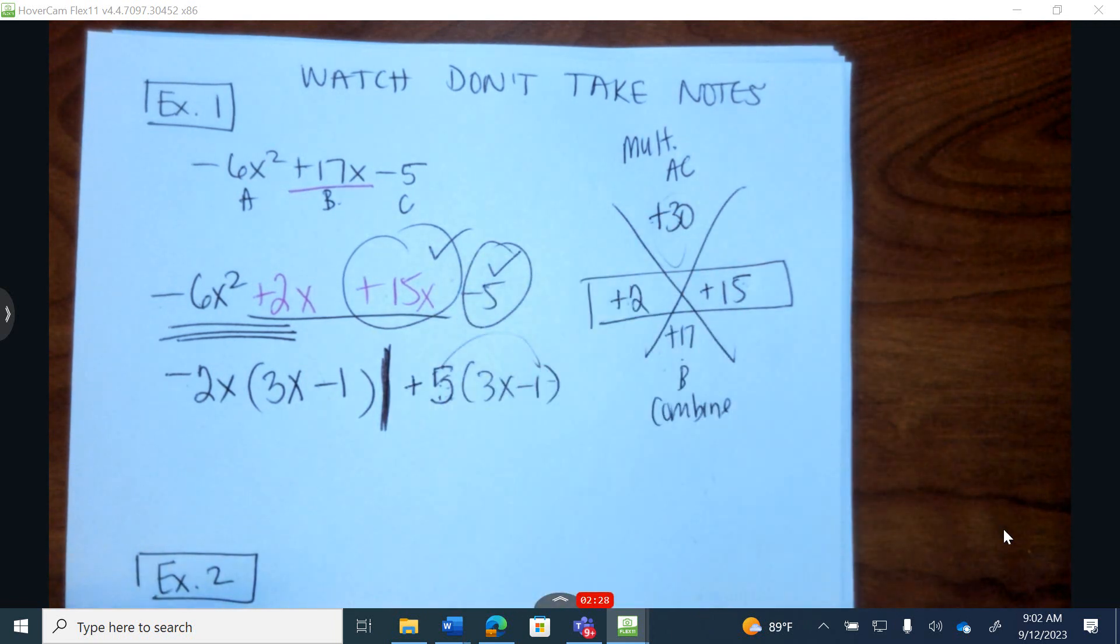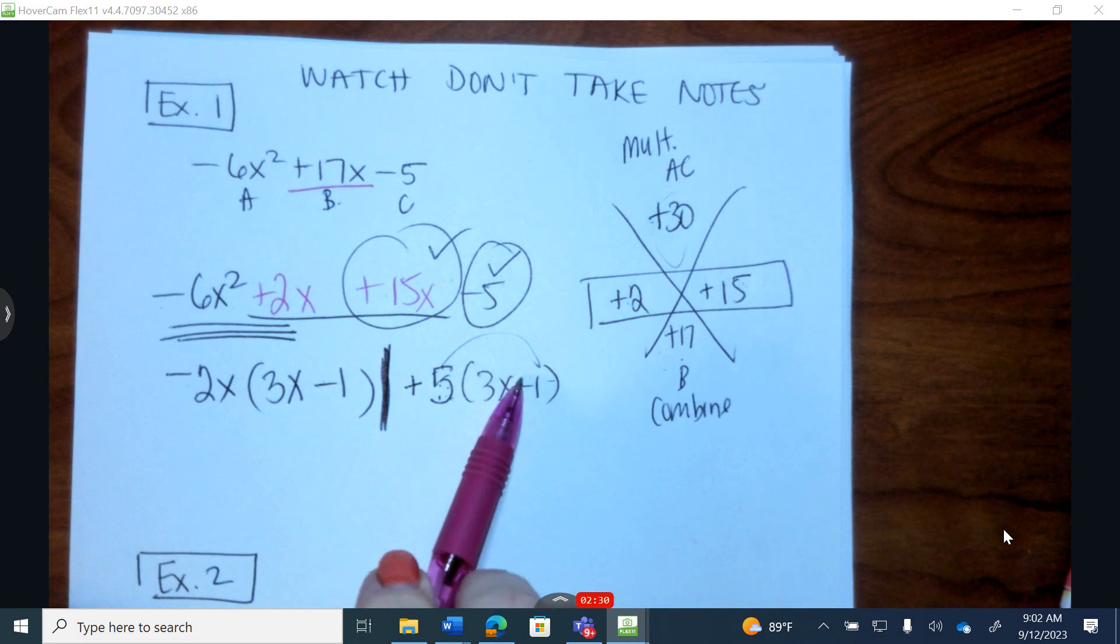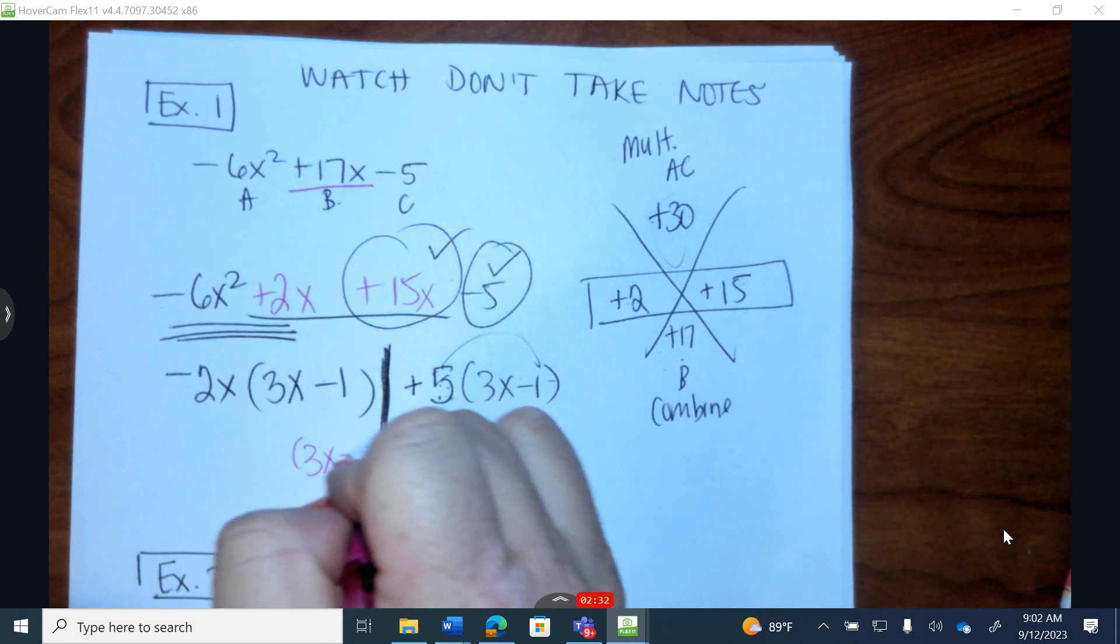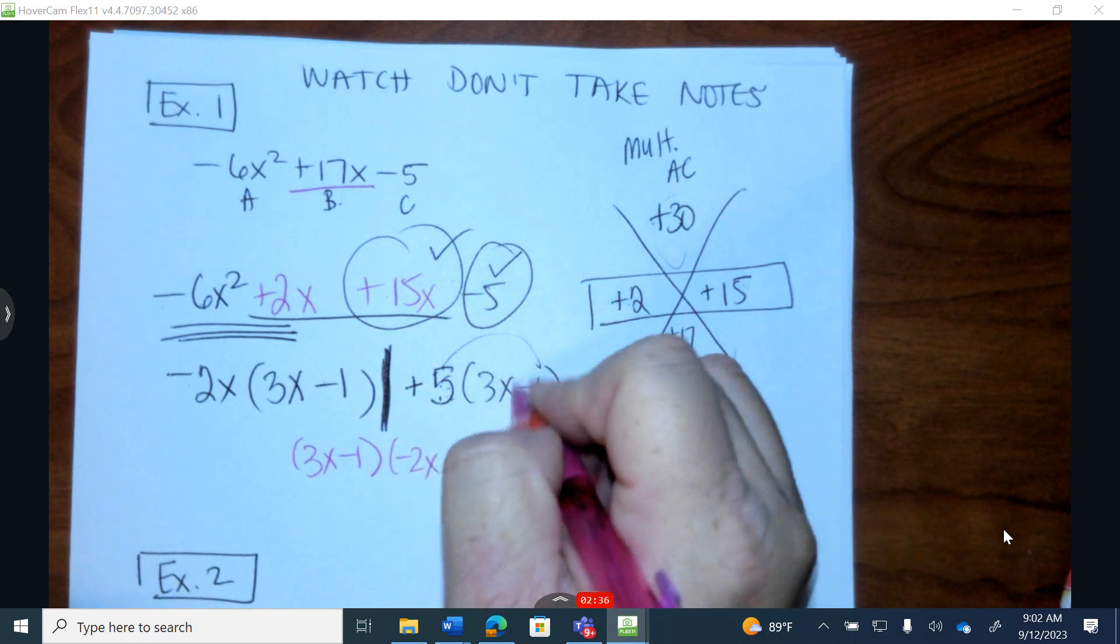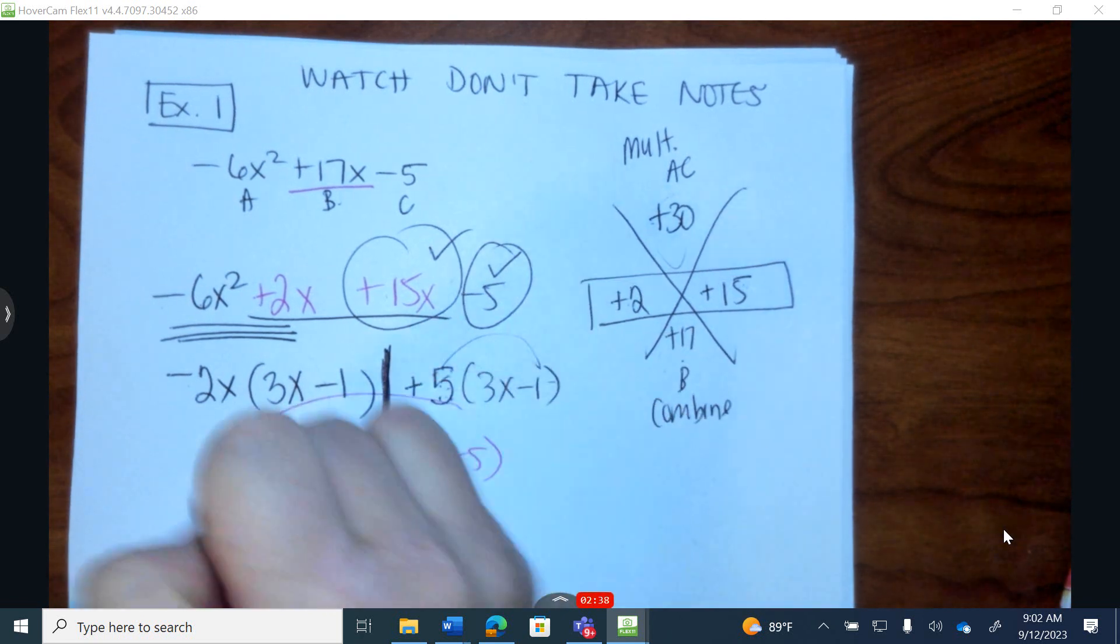All of the hard work is done. In front of the front half and the back half, they both contain the parentheses 3x minus 1. In front of the first parentheses, a negative 2x. In front of the second parentheses, a positive 5. And we're done.